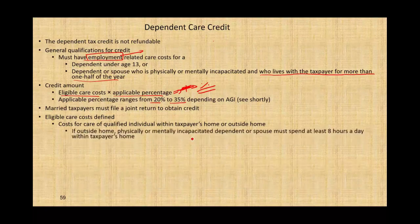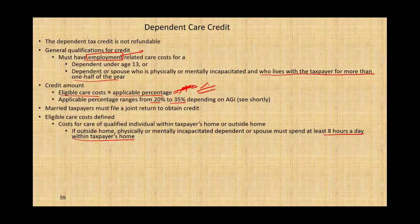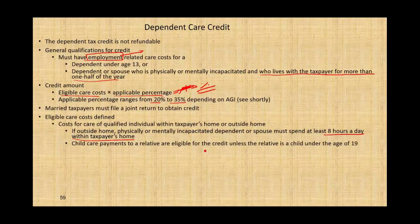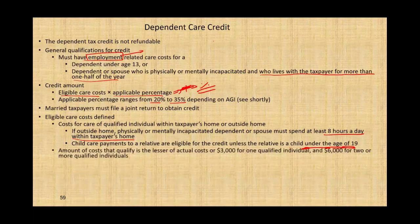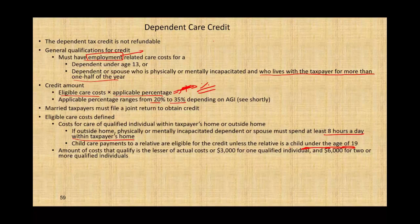If the care is outside the home for a physically or mentally incapacitated dependent or spouse, they must spend at least eight hours a day within the taxpayer's home. Childcare payments to a relative are eligible for the credit unless the relative is a child under the age of 19. The amount of cost that qualifies is the lesser of actual cost or $3,000 for one qualifying individual and $6,000 for two or more.